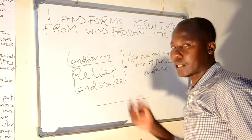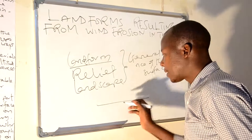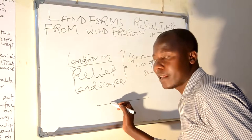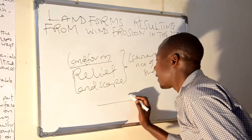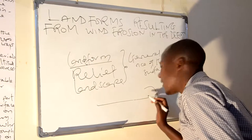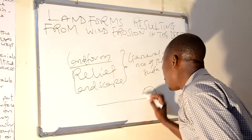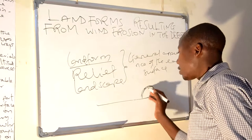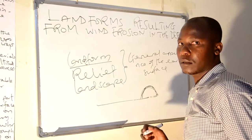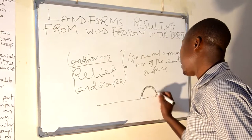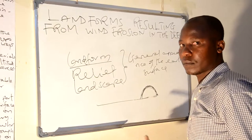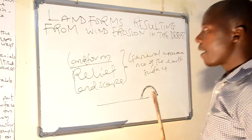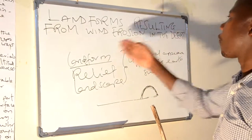Landform features can result both from erosion and from deposition. Wherever material is eroded, causing scars or features, and then carried and deposited at a destination area, those deposited features can also lead to landforms. But we are still focusing on the erosion features — landforms resulting from wind erosion in the desert.